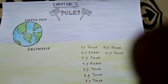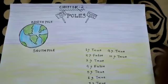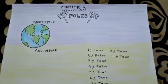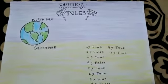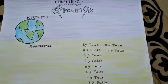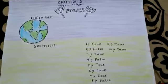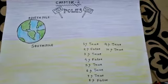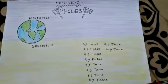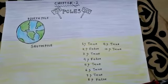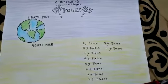Chapter 2 is all about poles. As you may have studied in SST, there are two poles: the North Pole and the South Pole. The North Pole is the northernmost point of the Earth's axis. Its latitude is 90 degrees north, and the North Pole sits in the middle of the Arctic Ocean, in water that is almost always covered with ice.